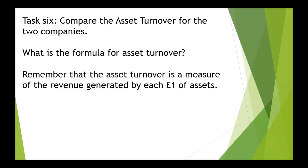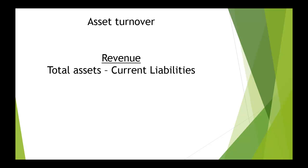Task 6 is to compare the asset turnover for the two companies. We need the formula for asset turnover. Remember, the asset turnover is a measure of the revenue generated by each pound of assets. The asset turnover is revenue divided by total assets less the current liabilities.